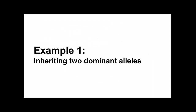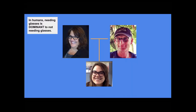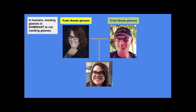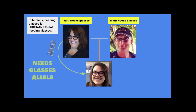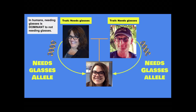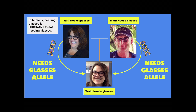For this first example, we're going to talk about what happens when you inherit two dominant alleles. We'll use needing glasses as our example. You can see from this picture that my mom has the trait of needing glasses, and so does my dad. My mom passed me the needing-glasses allele in her egg, and my dad passed me the needing-glasses allele in his sperm. So I have two dominant alleles, and obviously I need glasses.